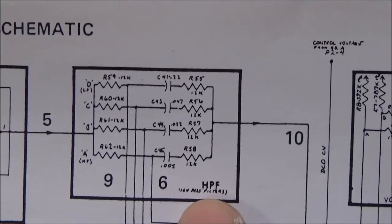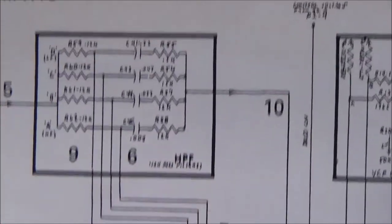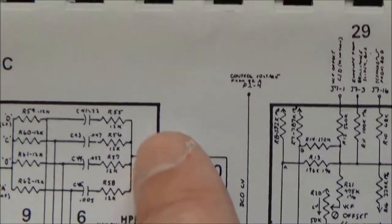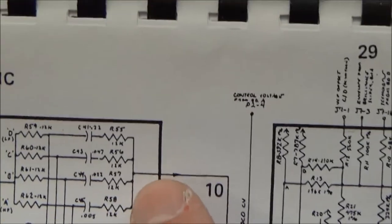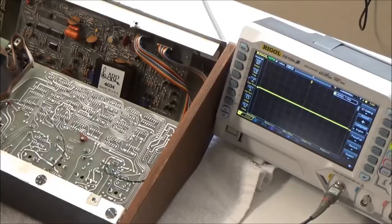Before it goes to the voltage-controlled filter, it goes through a few fixed high-pass filters that are enabled or disabled by the ROM chip. If we probe here on the output of any one of these 12K resistors from the high-pass filters, we'll get the input to the VCF.